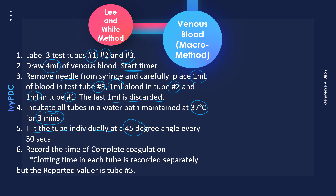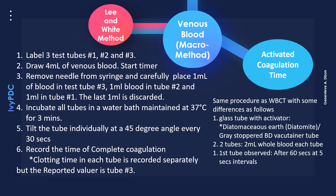Incubate all tubes at 37 degrees Celsius for three minutes. After three minutes, tilt the tubes individually at a 45-degree angle every 30 seconds, watching for complete coagulation. Complete coagulation is described as when the tube can be inverted without its contents spilling. When complete coagulation is achieved, record the clotting time. The clotting times of all three tubes should be recorded separately, but only tube number three's value is reported.